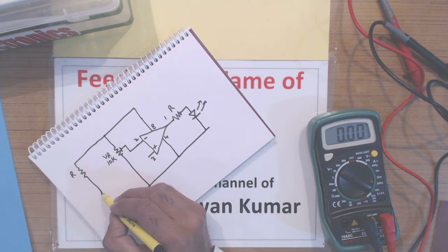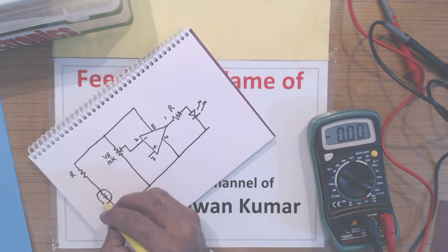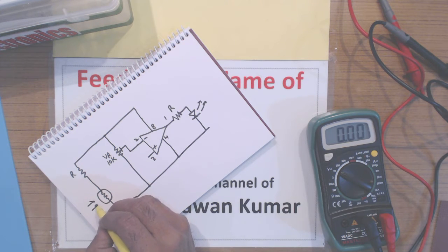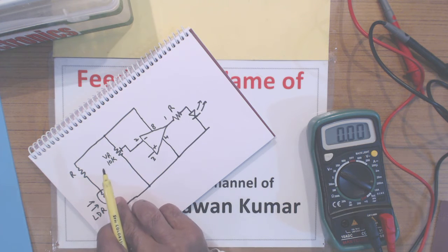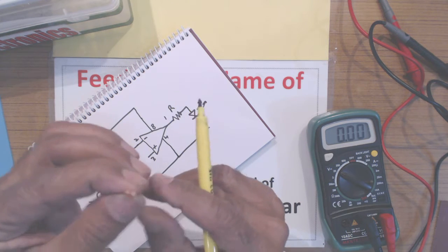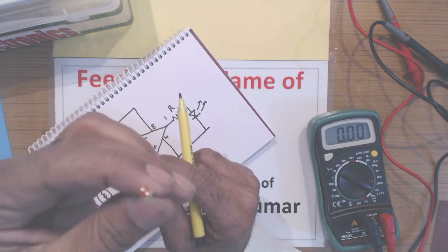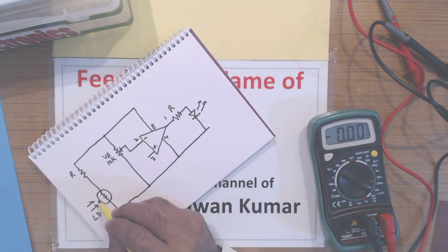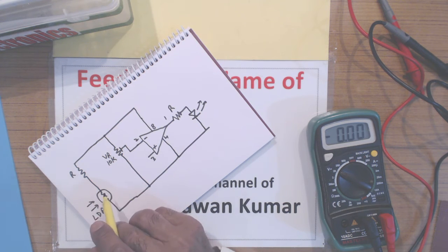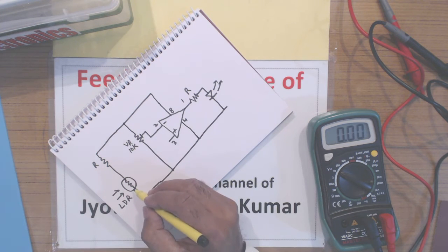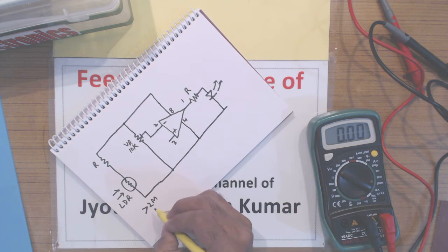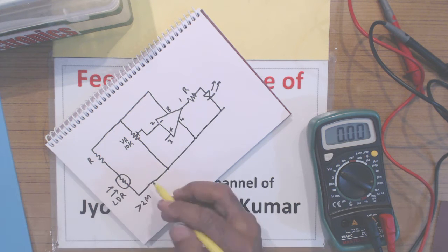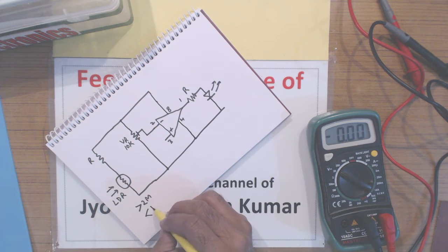This is another resistor - excuse me, this is LDR, light dependent resistor. When light falls on it, the internal resistance goes down, but in darkness the resistance is higher. For this one which I am using, in darkness the resistance is greater than 2 mega ohm, and when there is sufficient light falling on it, the resistance goes down even below 400K.